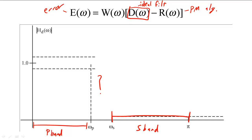The function r of omega is the real function that we would use to create our generalized linear phase filter.